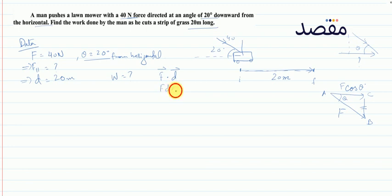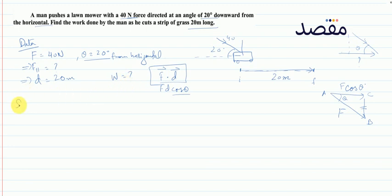Dot product होता है W = Fd cosθ। जब θ = 0 degree तो cos θ = 1, यानि दोनों vectors parallel हों तो work done maximum होता है। So W = Fd cosθ।